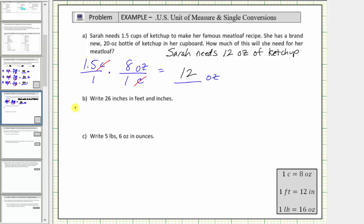We begin with 26 inches as a fraction with a denominator of one, we multiply it by a unit fraction, it will convert inches to feet. To form the unit fraction, we use a conversion, 1 foot equals 12 inches.